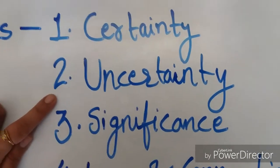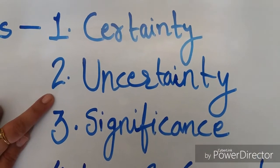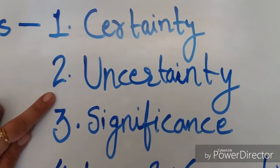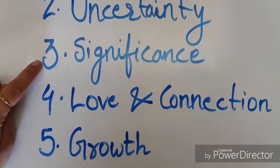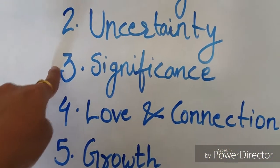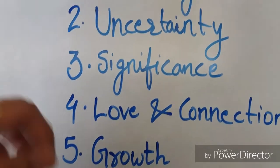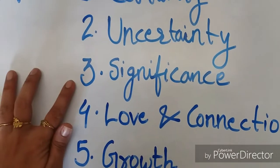Second is uncertainty. Some people want an adventurous life, like a cricket match. You like cricket match because you don't know what is going to happen next.